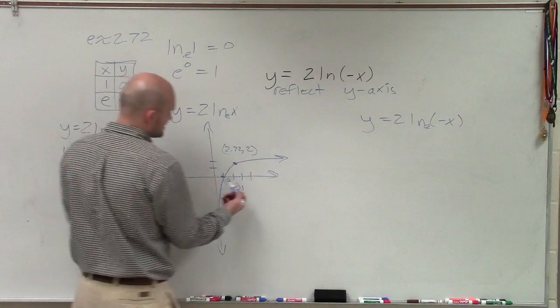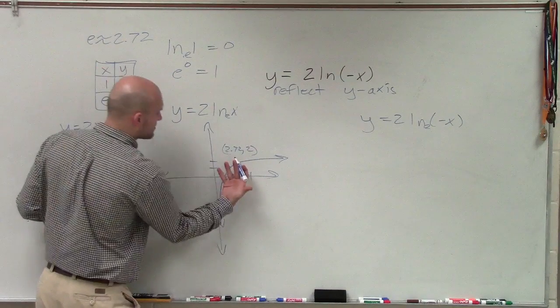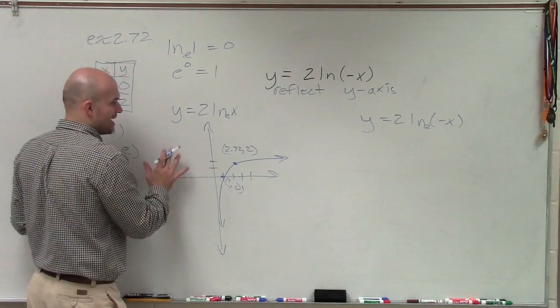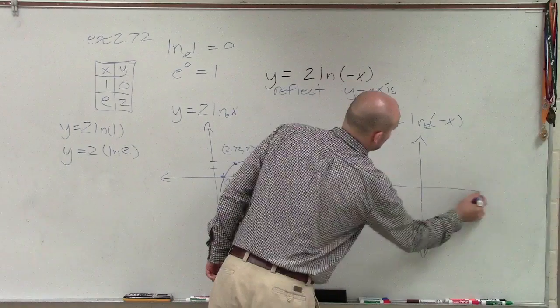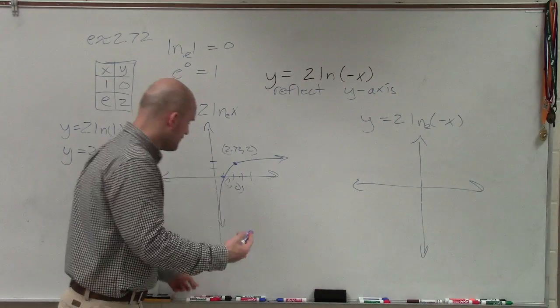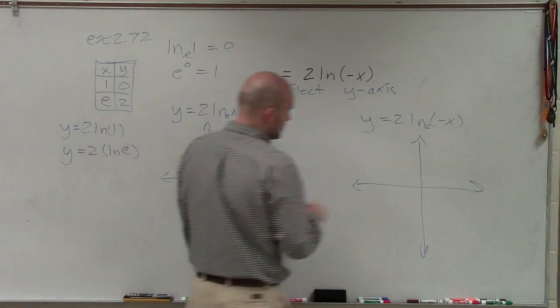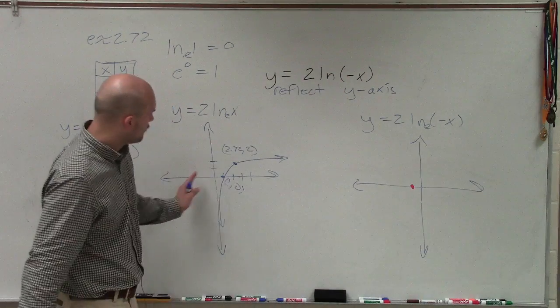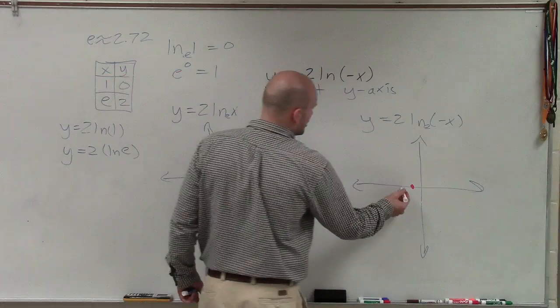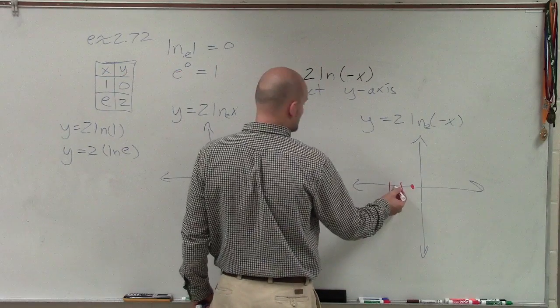So instead of my points now being positive, then now I'm going to take this graph and reflect it over the y-axis. So when I go ahead and graph this now on an xy-coordinate axis, instead of going over 1, I'm now going to go to the left one. And instead of going over 2.72, I'm now going to go to the left, 2.72 up 2.